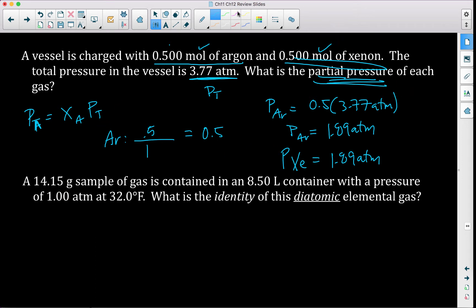Next up. It says that we have a 14.15 gram sample of a gas is contained in an 8.50 L container with a pressure of 1.00 atm at 32.0°F. What is the identity of this diatomic elemental gas? So here this is a mass, and here we have a volume, here we have a pressure and a temperature. So there's no change, and I want to know the identity of a gas, which means we're looking for molar mass so we can figure out what it is. So this problem, there's actually multiple ways we can solve it.